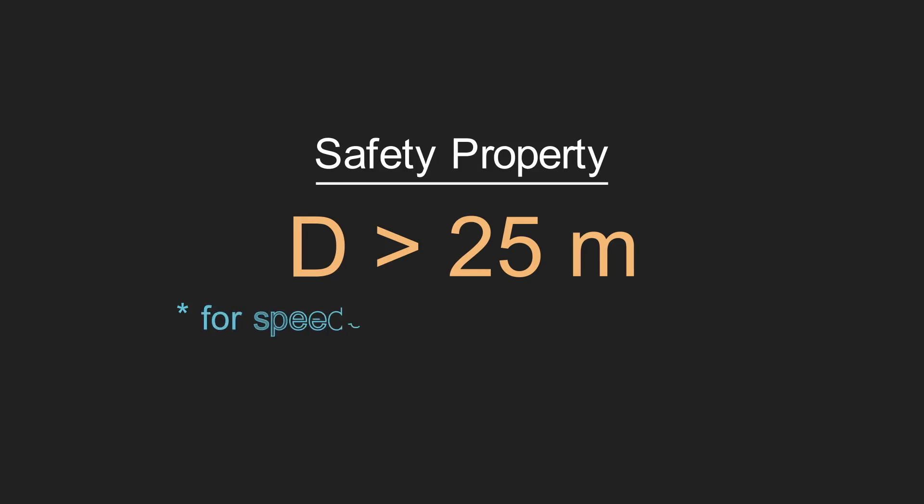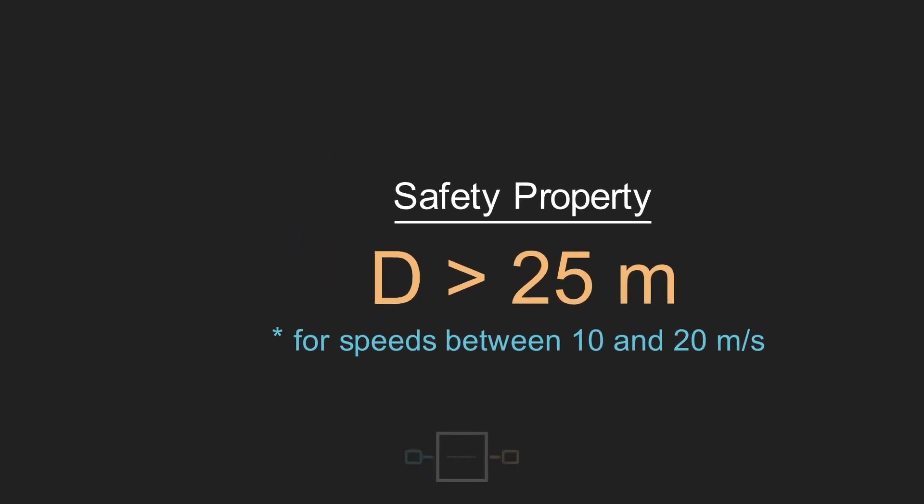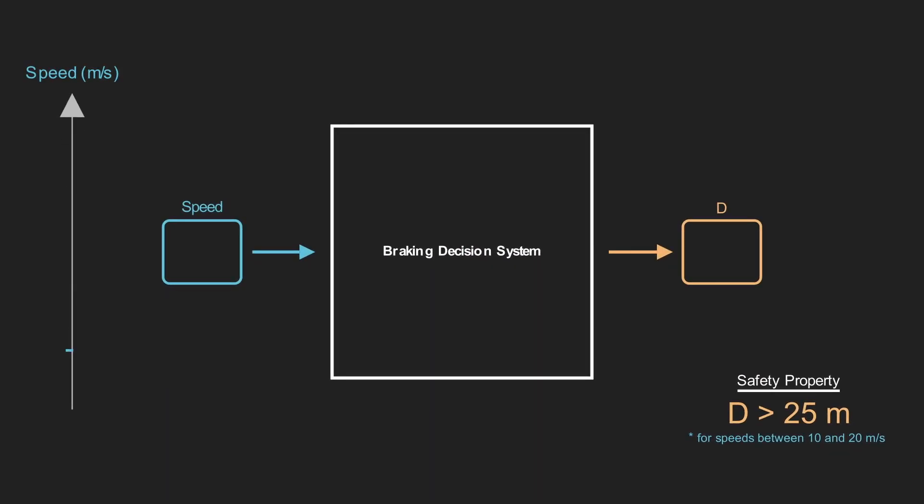In this case, we will assume that the system is designed for speeds between 10 and 20 meters per second. So what this means is that when we input any number between 10 and 20 to the system, it needs to output a number greater than 25. For example, if we plug in the speeds we saw earlier, we see that they result in outputs greater than 25 meters and satisfy our safety property. However, if we plug in a speed in our input range and see that the system outputs a value less than 25, we say that the system does not satisfy the safety property and the engineers would have to go back to the drawing board.